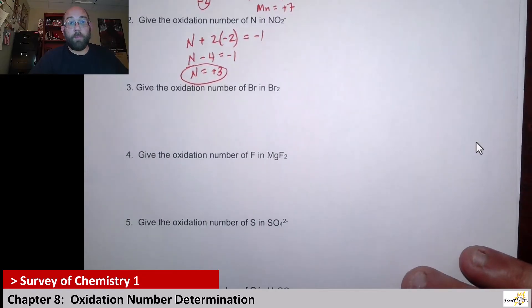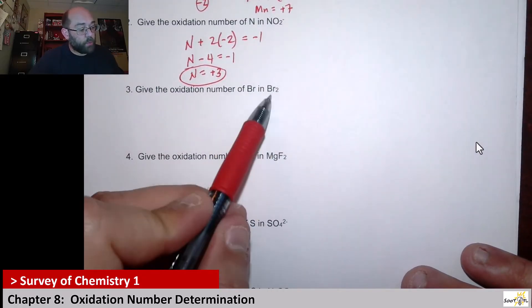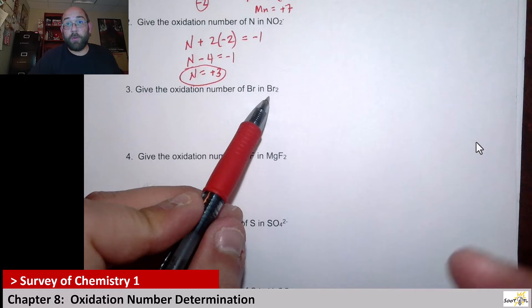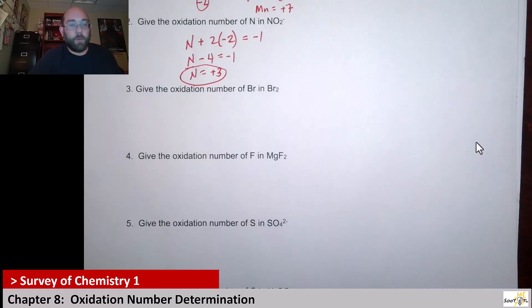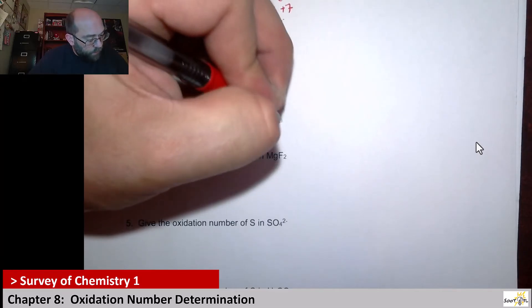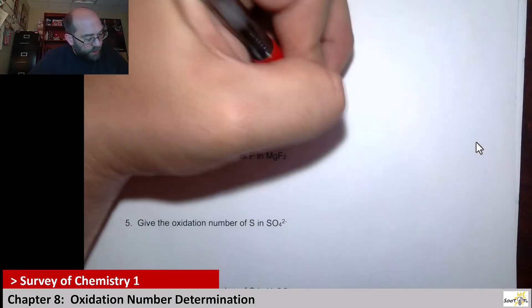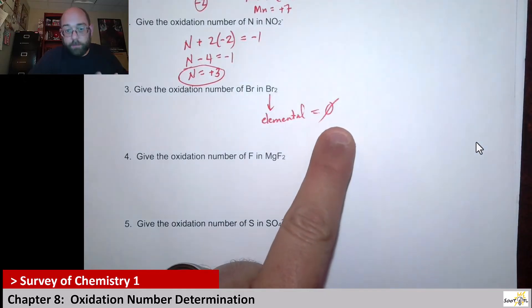All right, now bromine. In this case, this would be looking at the elemental rule because this is just Br2. This is part of those Brinkelhoffs I talk about, the diatomics that are elemental. So here, this is the elemental form and therefore it just equals an oxidation number of zero for bromine.